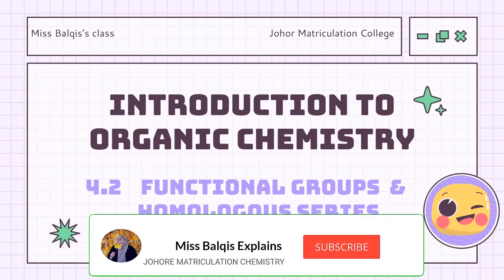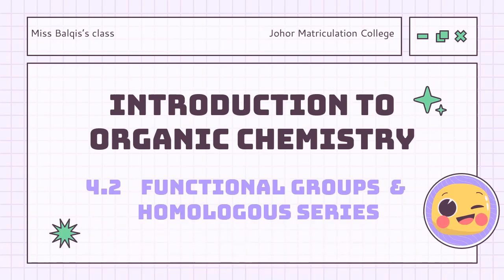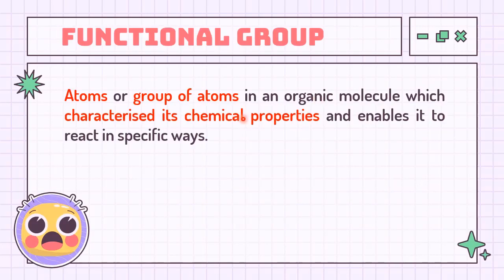Assalamualaikum warahmatullahi wabarakatuh and hello everyone. In this video, we're going to learn about the second subtopic in Introductions to Organic Chemistry called Functional Groups and Homologous Series. Functional groups refer to specific atoms bonded in a certain arrangement that give a compound certain physical and chemical properties. There are 14 functional groups that we're going to learn and we'll look at each one of them together.